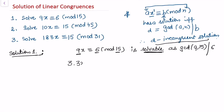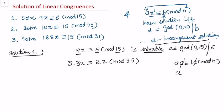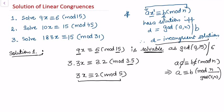We can write 9x ≡ 6 (mod 15) as 3·(3x) ≡ 3·2 (mod 3·5). Cancellation cannot be done directly. The rule is: if ac ≡ bc (mod n), then to cancel c we rewrite it as a ≡ b (mod n / gcd(c, n)). So canceling the 3 gives us 3x ≡ 2 (mod 5), and the solutions of this reduced congruence are the same as the original.